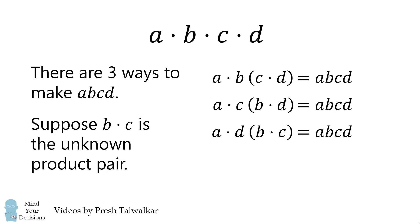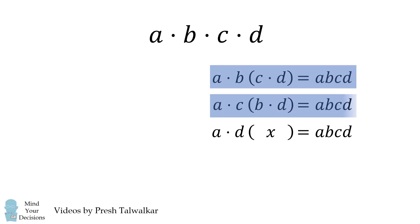Furthermore, suppose BC is the unknown pair. Well, if we write that as X, we still have two different ways that we can get the product ABCD.